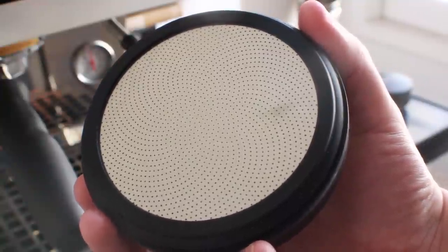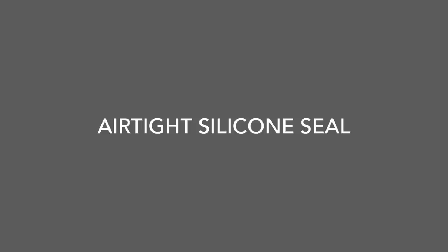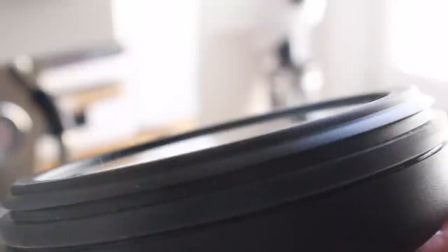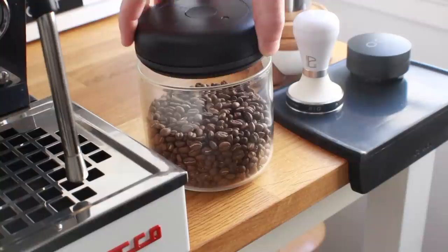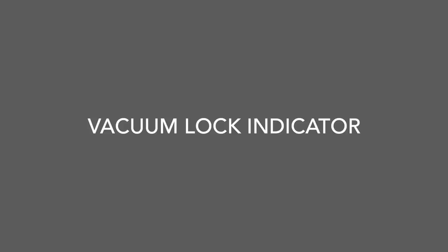Next is the airtight silicone seal. This is kind of obvious. It's a nice soft silicone seal that basically keeps air out and also keeps the pressure in. And it also makes a nice sound when you put it on.